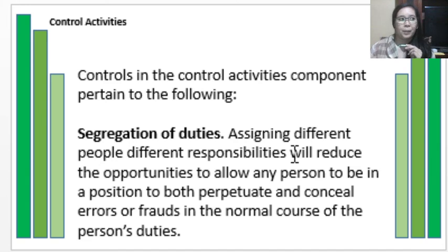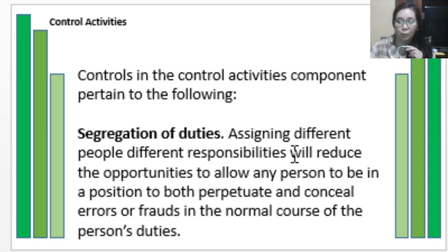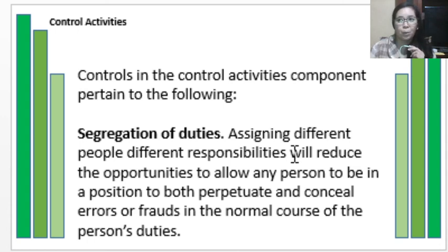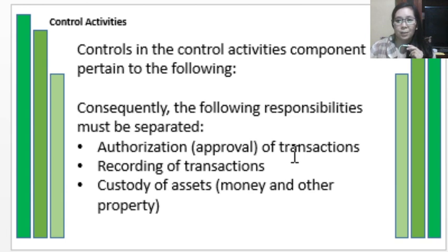In segregation of duties, accounting should be separate from financial operations; recording should be separate from those handling cash transactions; recording should be different from those making bank reconciliations; and recording should be separate from those depositing or accepting cash — so that the people transacting with cash accounts are different from those recording such transactions, avoiding errors or fraud.